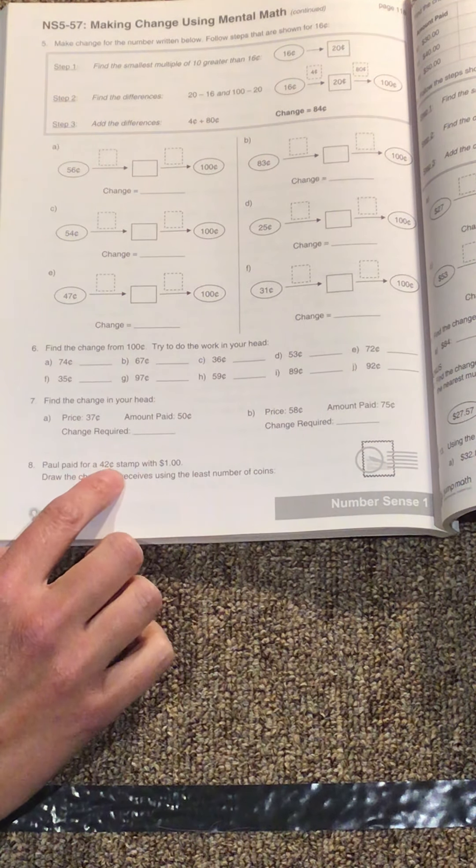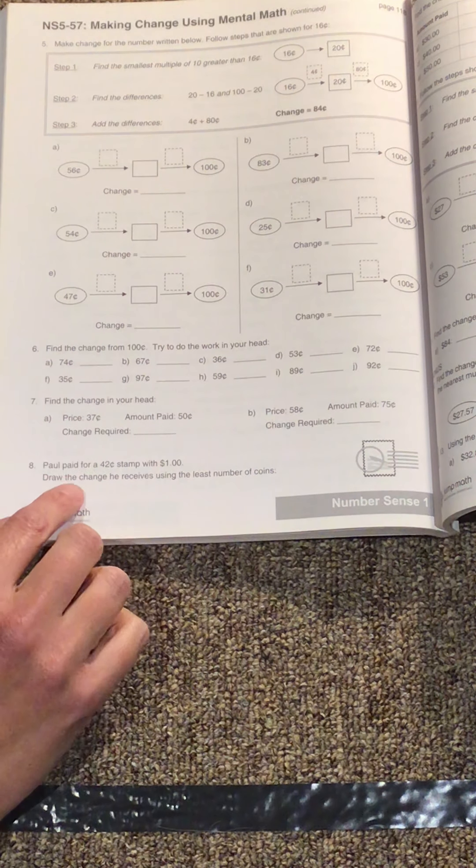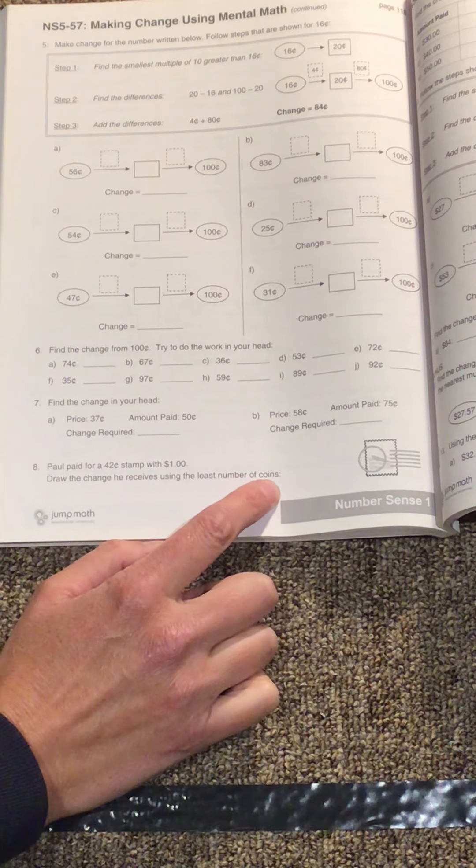Paul paid for a 42-cent stamp with $1. Draw the change he receives using the least number of coins.